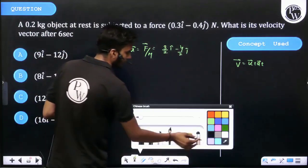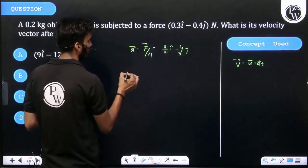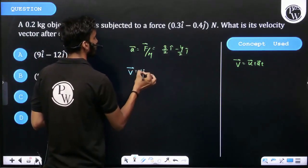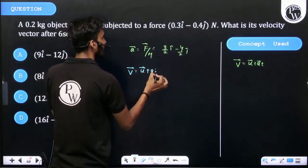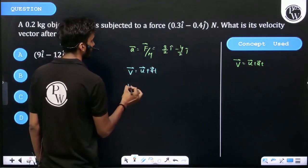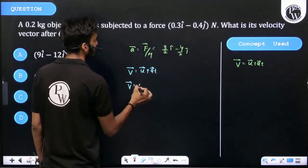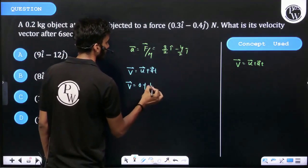Now we can say from formula V vector is equal to U vector plus A vector into T. And velocity vector initial is zero. Acceleration is 1 by 2.